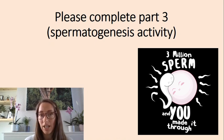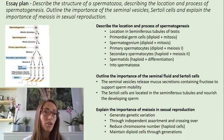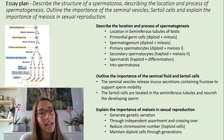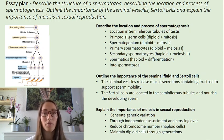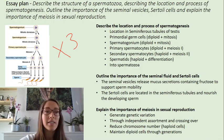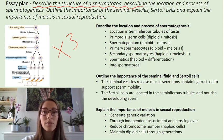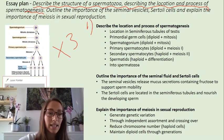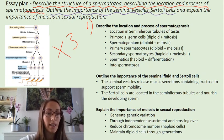Please pause the video and complete part three of your spermatogenesis activity. This part asked you to write an essay plan — here is a suggested structure. It's fairly detailed; you probably wouldn't have enough time to write this in the exam. The next part of your activity will ask you to type up an answer, so annotate and add to your plan. With essay questions, always think about the three subheadings: first, describe the structure of the spermatozoa and the location and process of spermatogenesis; second, outline the importance of the seminal vesicles and Sertoli cells; third, explain the importance of meiosis and sexual reproduction.